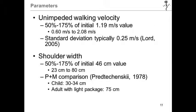Unimpeded walking velocities were varied from 50 to 175 percent of their initial value from the SFPE design of 1.19 meters per second. While these were held at constant values for each simulation, we compared this to the NIST report literature review, which had a standard deviation typically of 0.25 meters per second. Therefore, most of the scenarios were run within two standard deviations.